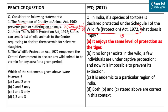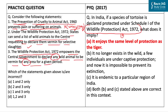The second statement says that under the Wildlife Protection Act, 1972, states can send a list of wild animals to the Centre requesting to declare them vermin for selective slaughter. This statement is correct, as the state government has to make a request to the Centre for an animal to be declared as vermin. The third statement says the Wildlife Protection Act, 1972 empowers the central government to declare any wild animal to be vermin for any area for a given period of time.